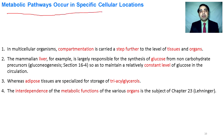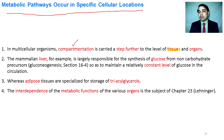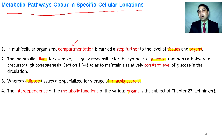Different metabolic pathways occur in specific cellular locations. In multicellular organisms, compartmentation extends further to specialized tissues and organs performing specialized metabolic reactions. For example, the liver is involved in the synthesis of glucose and maintains constant glucose levels. Adipose tissues are involved in the storage of triglycerides. The interdependence of metabolic functions among various organs is the subject of Chapter 23.